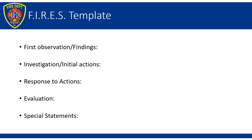The use of the FIRES template system of report writing undoubtedly adds work to the fire officer's duties. This system is meant to put the necessary documentation in place for an inquiry about an incident at a later date. This report is not designed to be written as a post-incident analysis, but rather as a factual statement of what occurred on the fire scene. This is not a place to write about opinions of what could have been better. This system is for documenting the facts of the incident. The template includes five sections: first observation and findings, investigations and initial actions, response to actions, evaluation, and special statements.